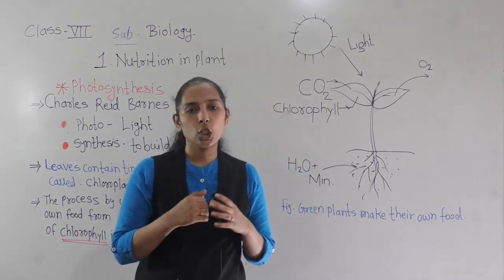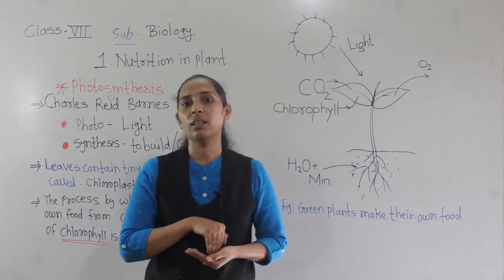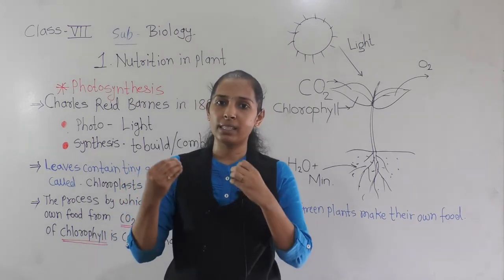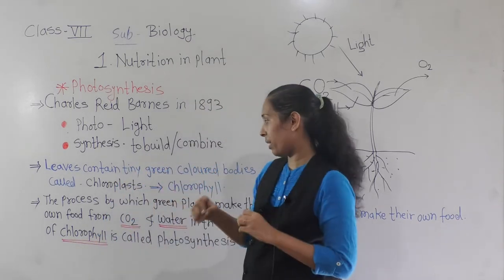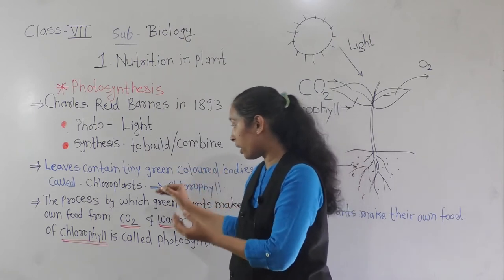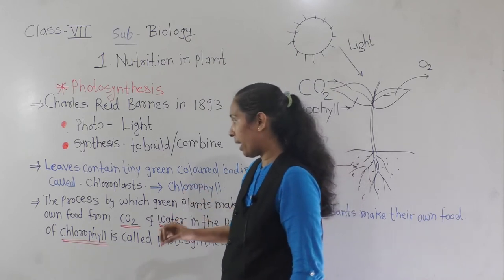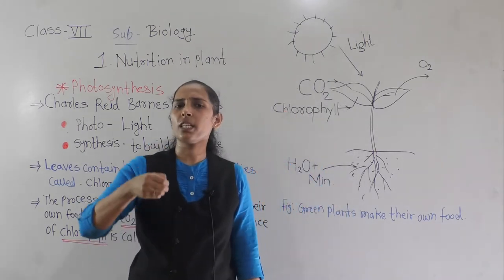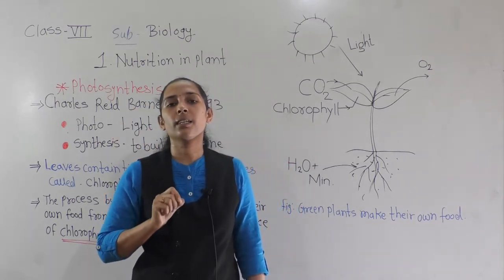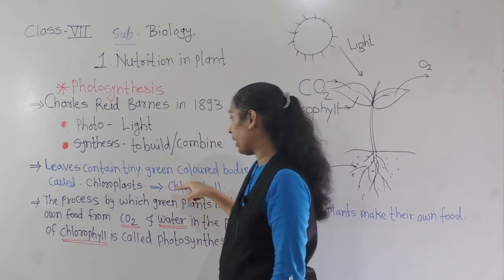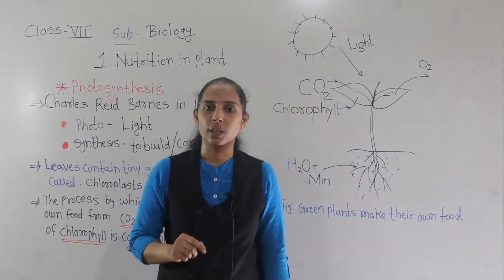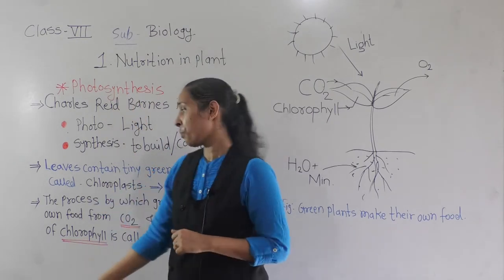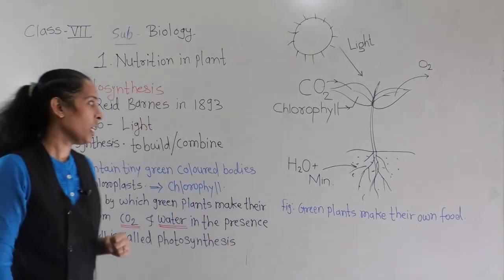Plants carry out photosynthesis because the leaves have a green color pigment called chlorophyll. This chlorophyll is present inside tiny green color bodies in the leaves called chloroplasts. The green pigment inside these chloroplasts is why the leaves of plants look green. Chlorophyll plays a vital role in the process of photosynthesis.